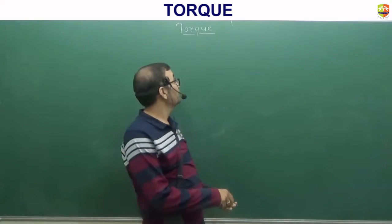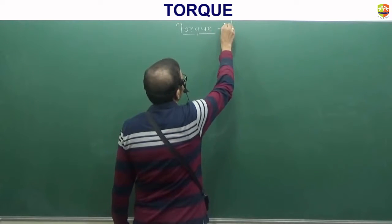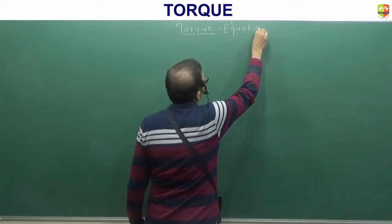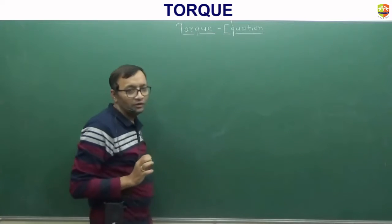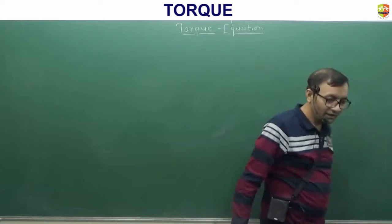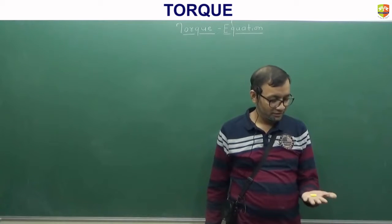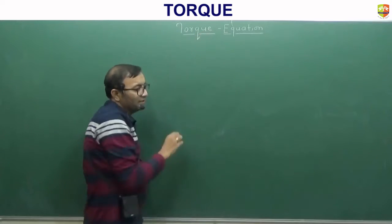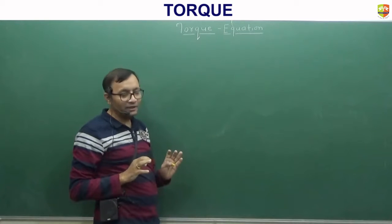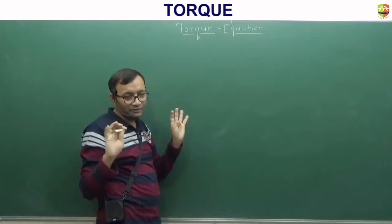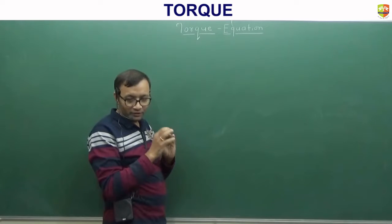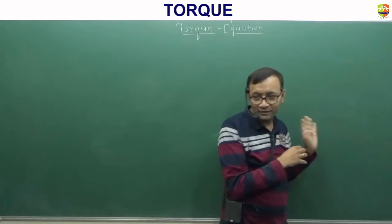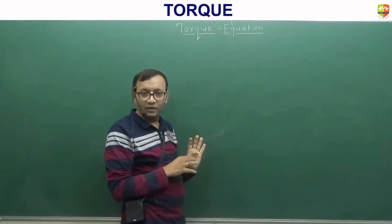Alright, so next we'll write down the torque equation. Should we derive it or directly we'll write down? Derivation we can take later. See what will happen is that you'll get mathematically so much bombarded with all the equations and everything that you'll not be able to enjoy the numerical step. First let us do everything, you'll feel good about yourself and then I'll tell you how that torque equation comes. Ready? Make sense?